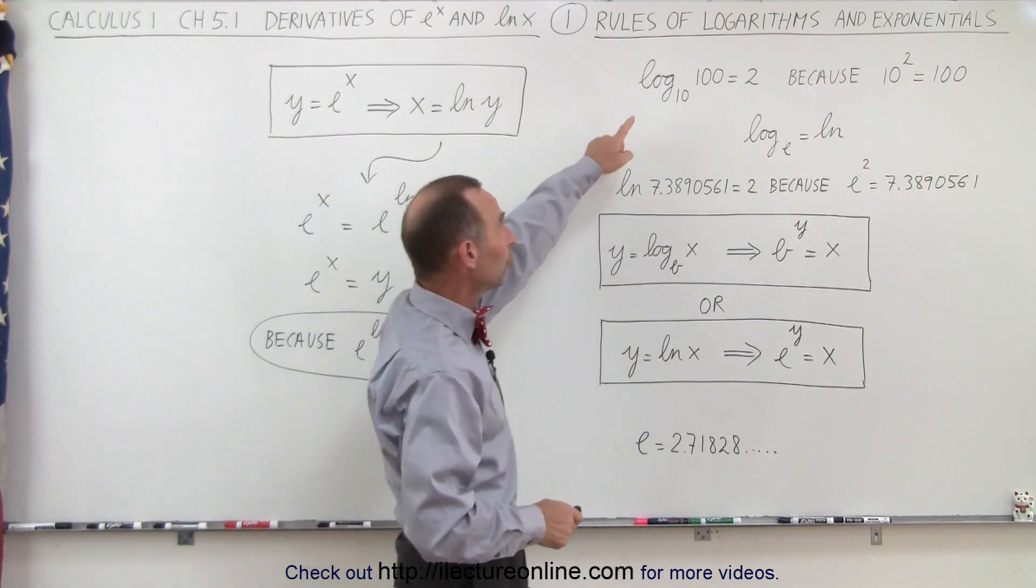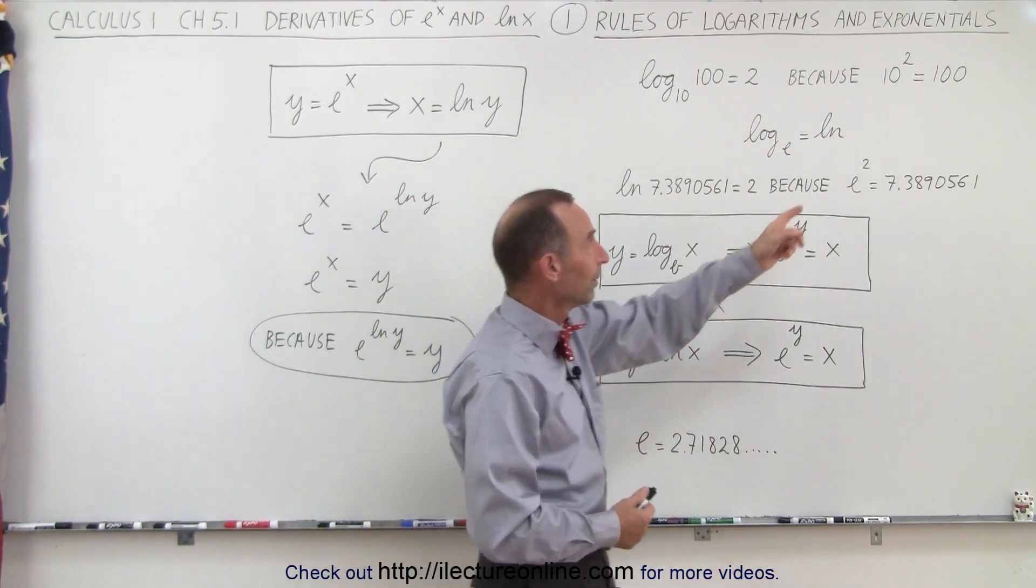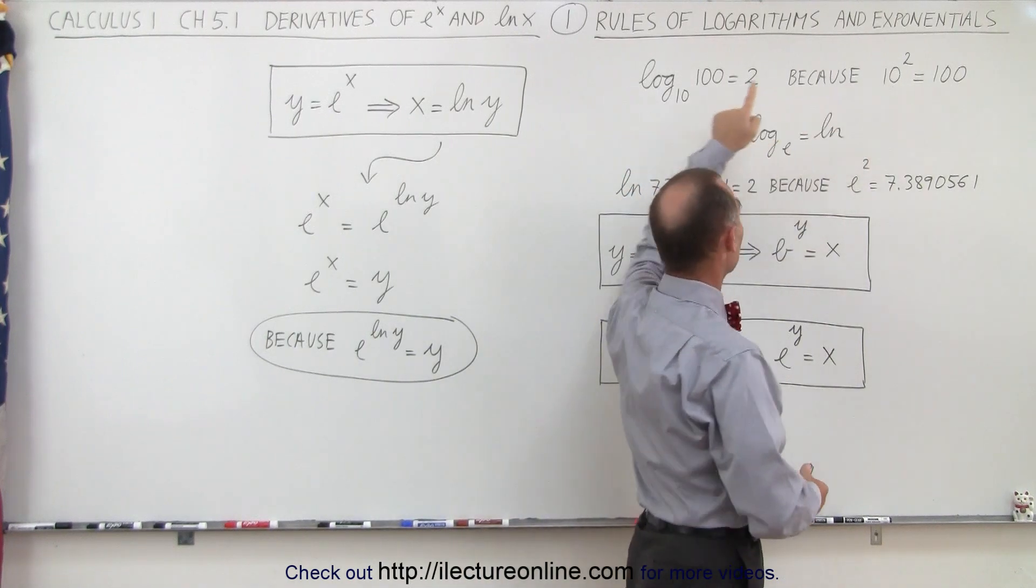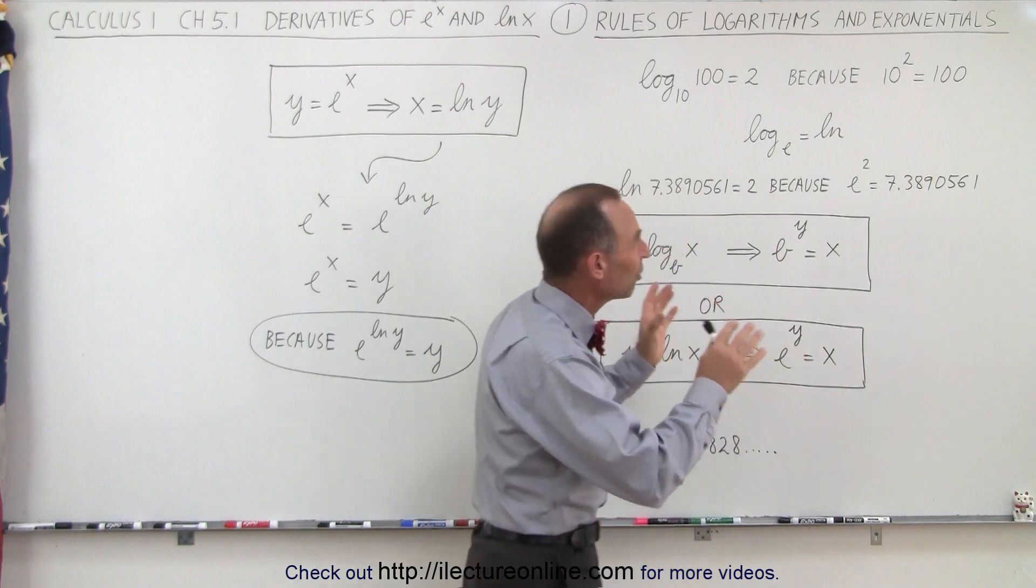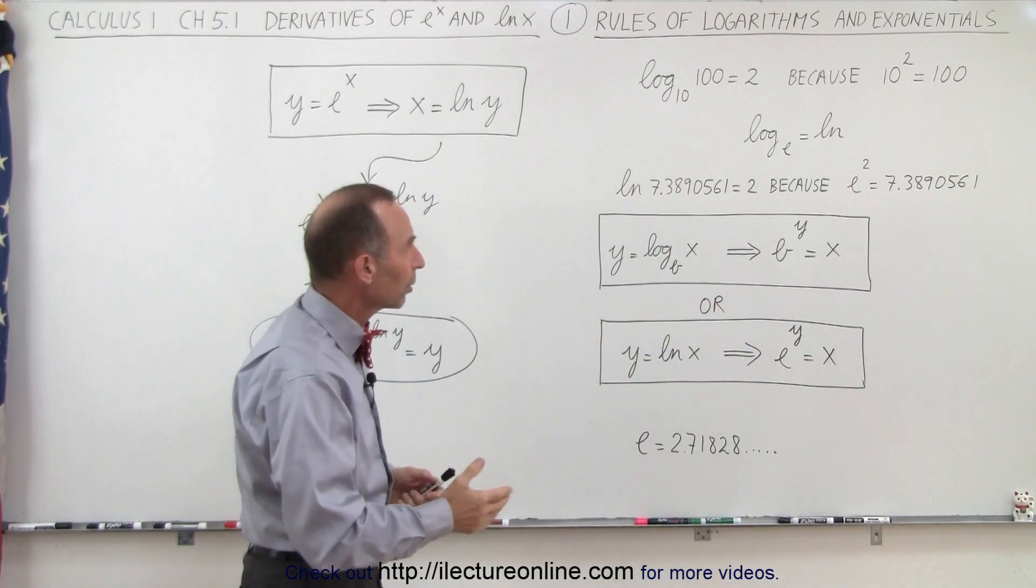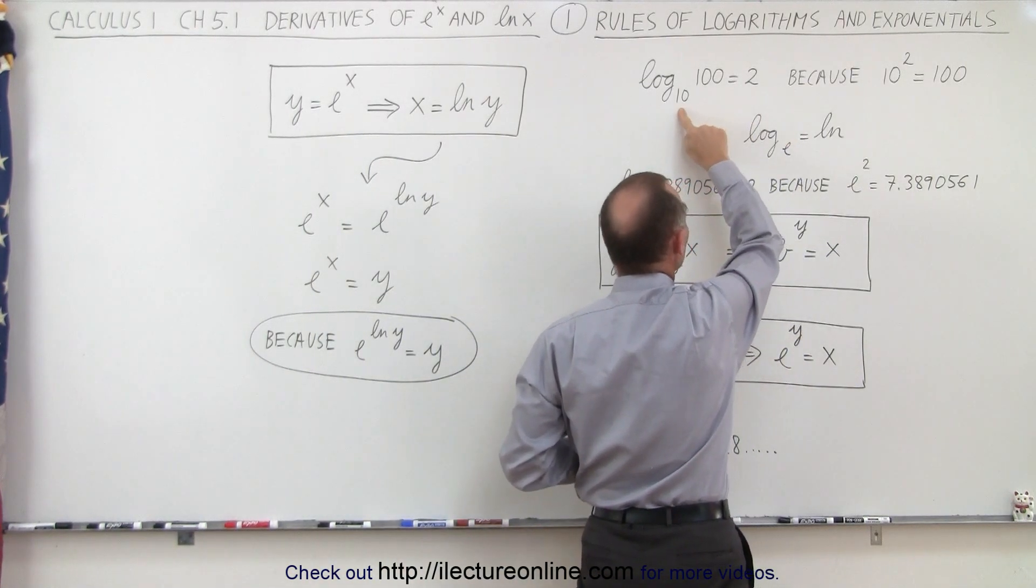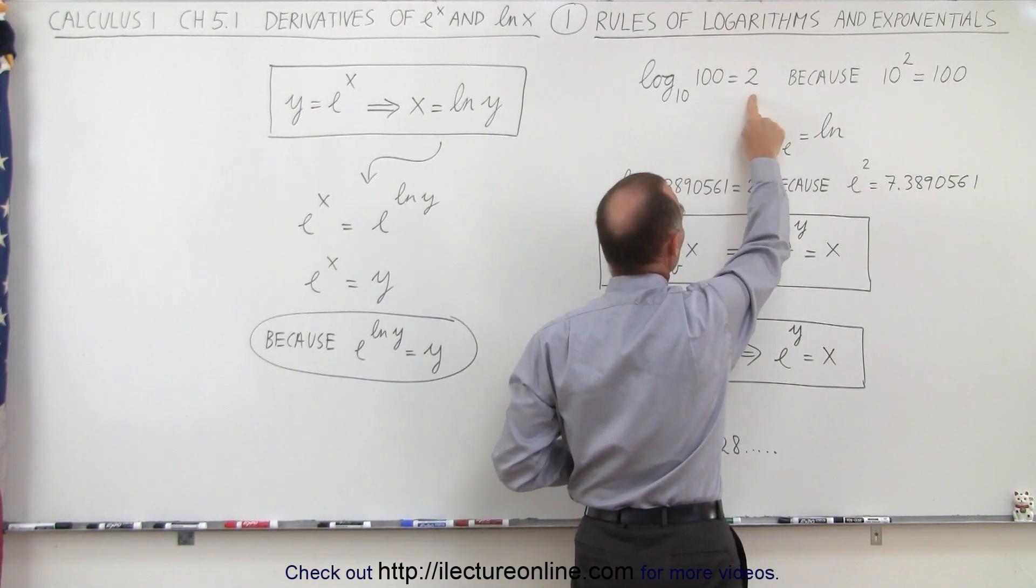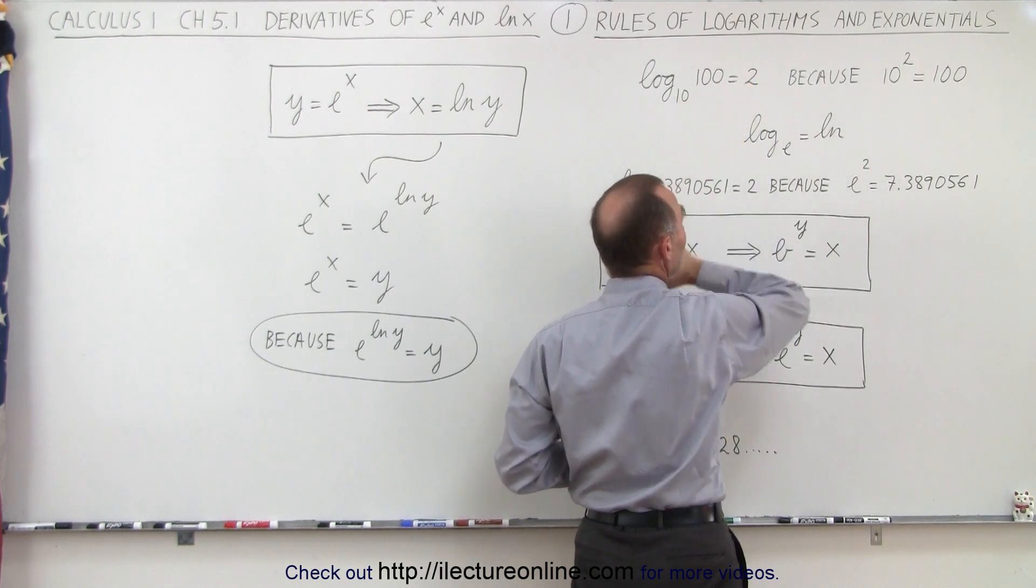First, we can say that the log to the base 10 of 100 is equal to 2 because 10, which is the base of the logarithm, raised to the second power equals 100. That's usually the best way to comprehend what logarithms do. Logarithms take big numbers and turn them into small numbers by using the base. The relationship is if you take the base and raise it to this exponent, you get this number back.